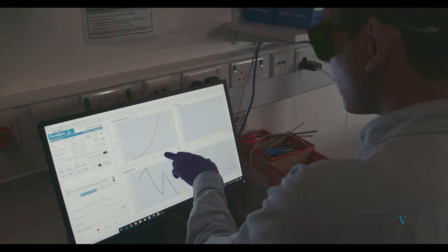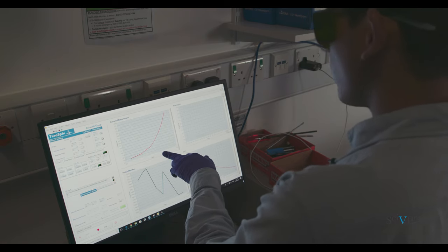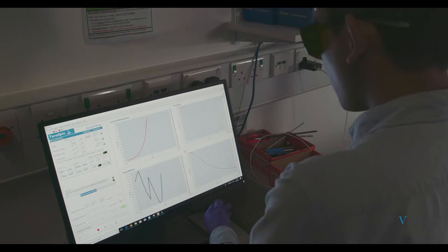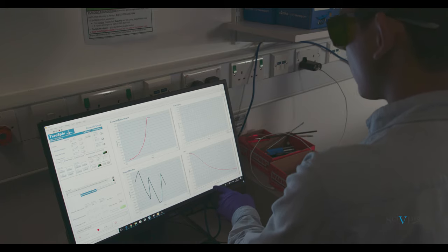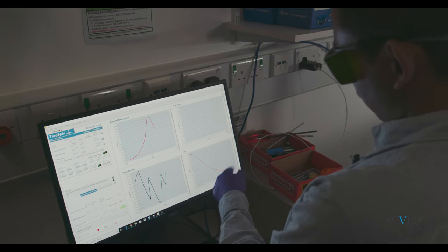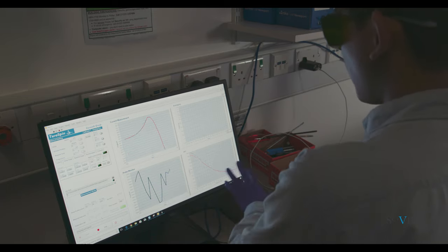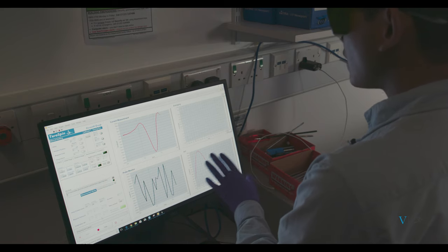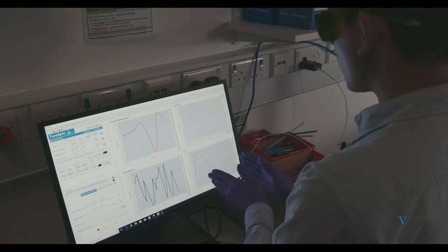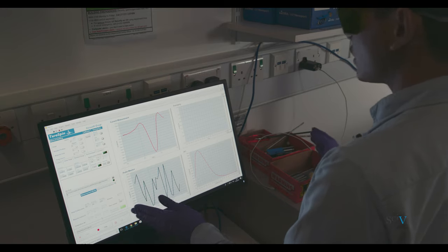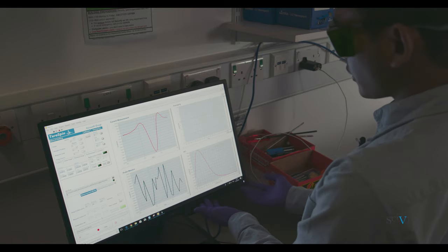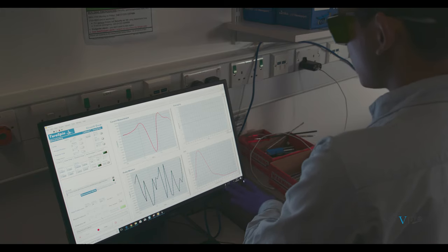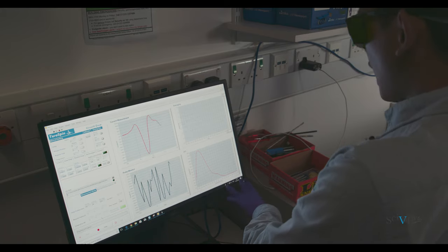This is the terahertz time domain data acquired from the cobalt-platinum calibration sample. This is the amplitude of the fast Fourier transform of the acquired time domain data. The cobalt-platinum sample is supposed to emit a broadband signal up to 30 terahertz. But here, the FFT is only up to 2 terahertz. This is due to the cutoff frequency of the zinc telluride crystal in the detection area.